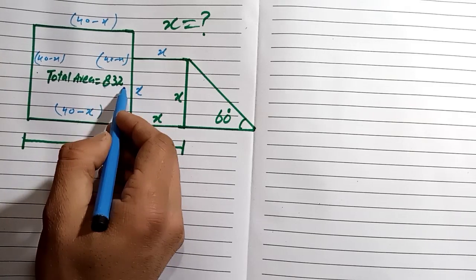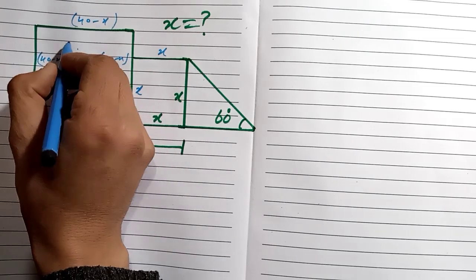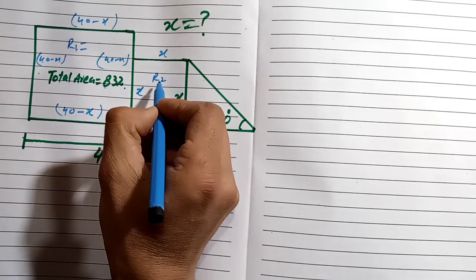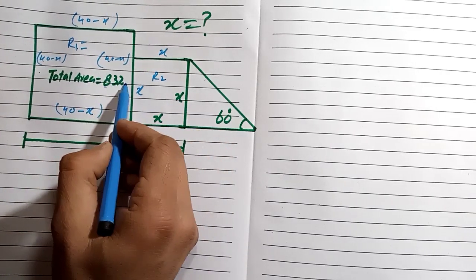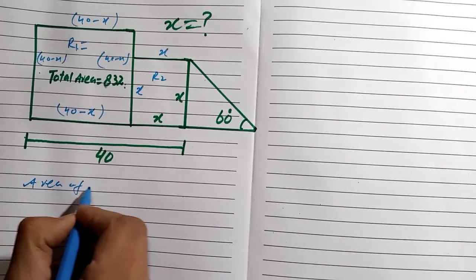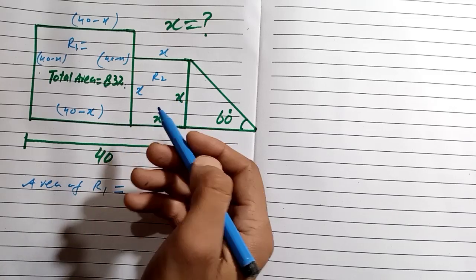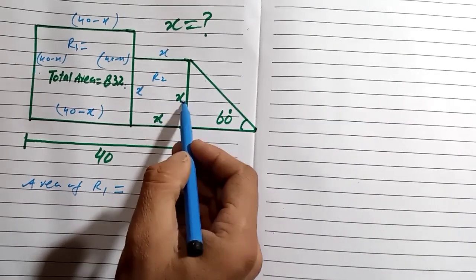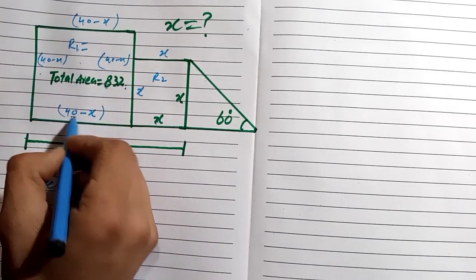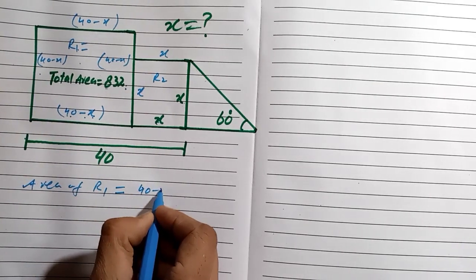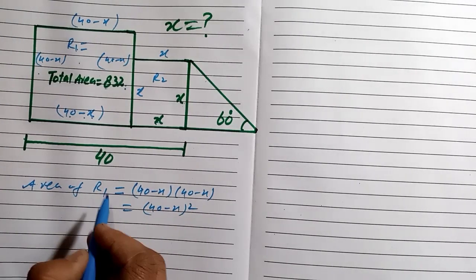We are given the total area which is equal to 832. We name the two square regions: Region 1 (the larger square) and Region 2 (the smaller square). The area of Region 1 — since it is a square — is length times width, which gives us (40 minus x) multiplied by (40 minus x), which equals (40 minus x) squared.